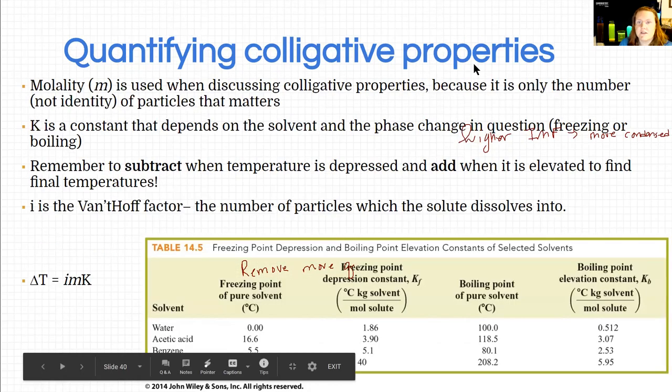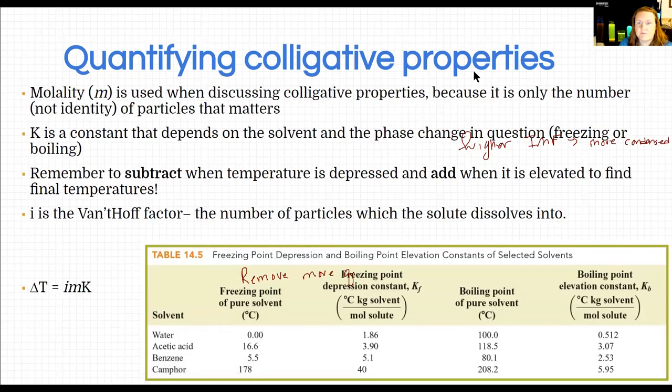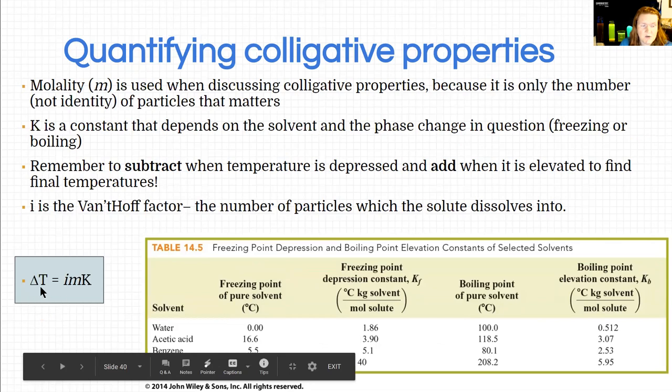So the first calculation type that we're going to look at is going to be the change in temperature for freezing or boiling. And it's the same formula regardless if you're freezing or boiling. And so I've outlined all the variables here for you. And the equation is this one.